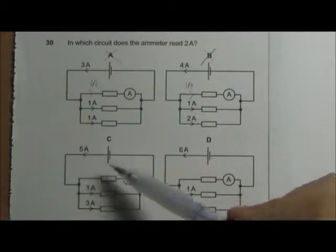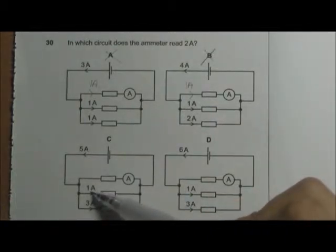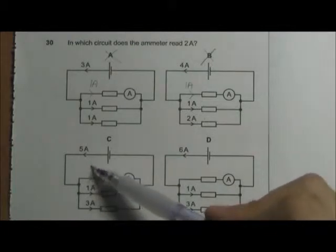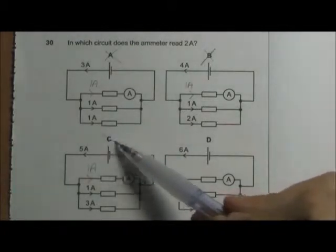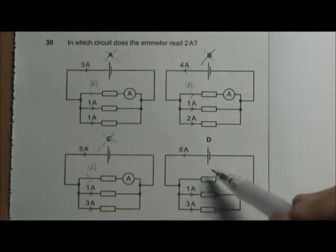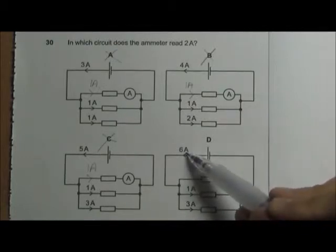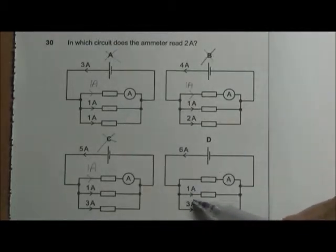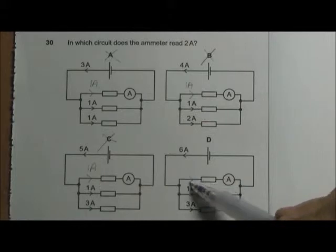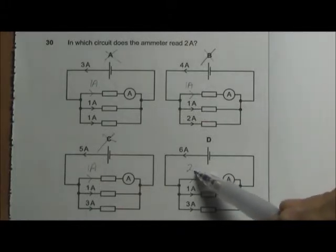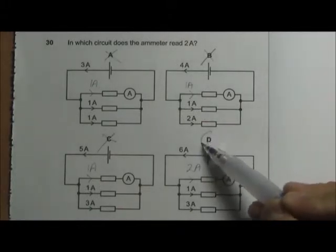Total current 5 amperes. Current here is 1 ampere, 3 amperes. So the current passing through the ammeter should be 1 ampere as well. So C is wrong. Option D: total current 6 amperes. This is 1 ampere, 3 amperes. So the current passing through the ammeter should be 2 amperes. Hence the answer should be D.